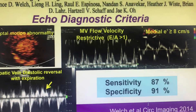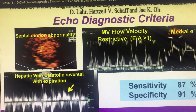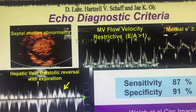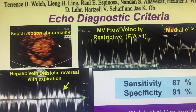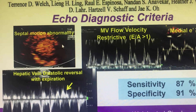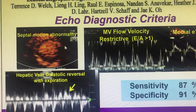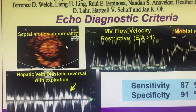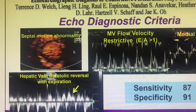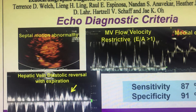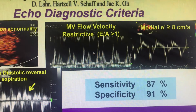To summarize the constrictive pericarditis criteria, with a specificity of 91% and sensitivity of 87%: first is septal dependence. There are many reasons for septal dependence — even severe pulmonary hypertension can have the septum always deviating towards the LV, or severe LV diastolic dysfunction can have the septum deviating towards the right ventricle — but it will not vary much with respiration. The respiratory variation of septal motion abnormality is more confirmatory of constrictive pericarditis.